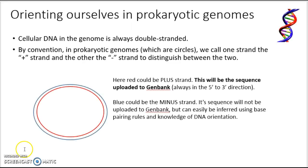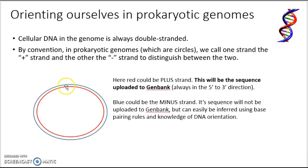Let's orient ourselves in a prokaryotic genome. First of all, remember that cellular DNA in a genome is always double-stranded. Chromosomes consist of double-stranded DNA — strand 1 and strand 2, a strand and its anti-parallel complement as the second strand. Here I'm showing a representation of a prokaryotic genome, and the two circles imply the two strands that make up the double-stranded DNA molecule.